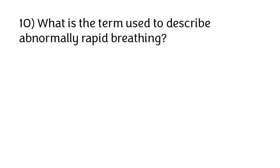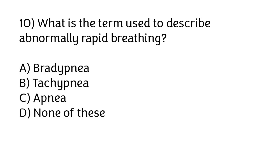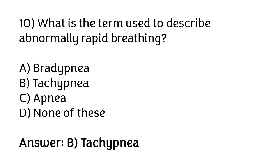What is the term used to describe abnormally rapid breathing? Options: bradypnea, tachypnea, apnea, none of these. The correct answer is option B — tachypnea is the term used to describe abnormally rapid breathing.